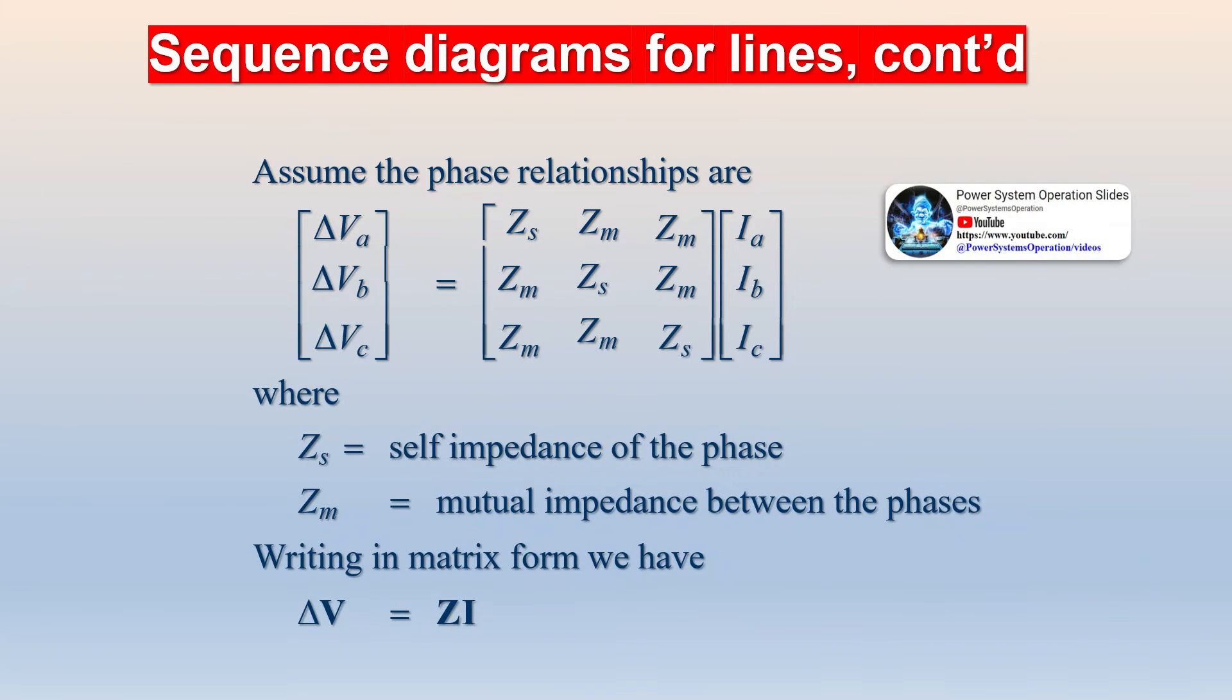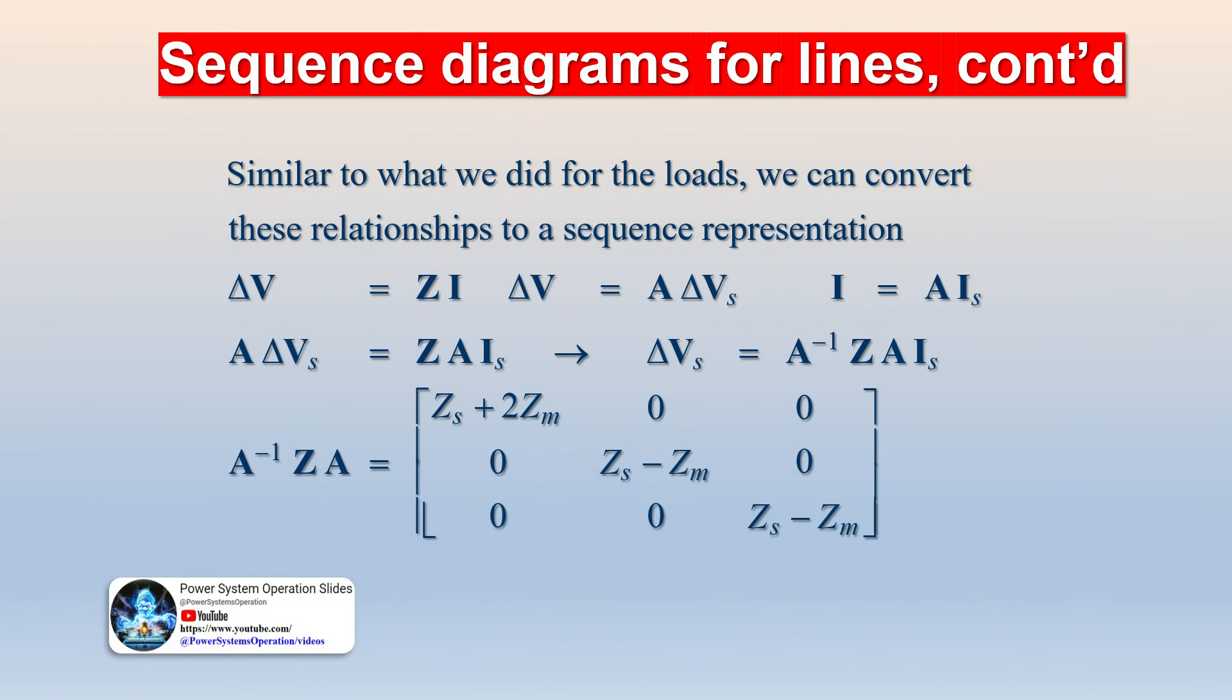In negative phase sequence component, the set of the three phasors are equal in magnitude, spaced 120 degrees apart from each other, and having the phase sequence opposite to that of the original phasors. The three-phase balanced system is a special case of a general three-phase system in which zero and negative sequence components are zero.